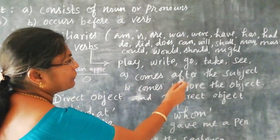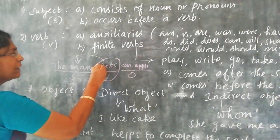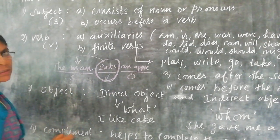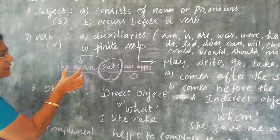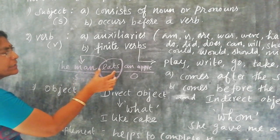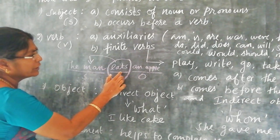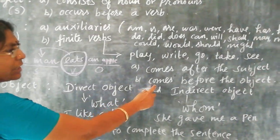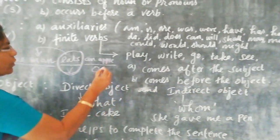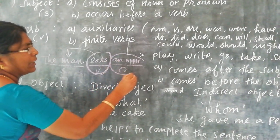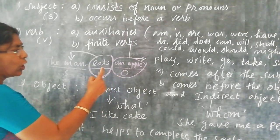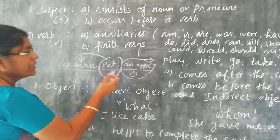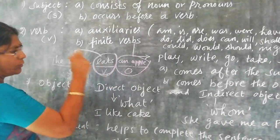The verb comes after the subject and before the object. In our example, the subject is 'the man,' and 'eats' is the verb — so the verb 'eats' comes after 'the man.' The object is 'an apple,' and 'eats' comes before the object.